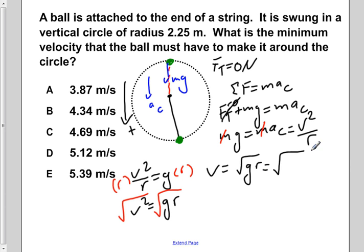Now if we plug in the initial values and our given values, acceleration of gravity is 9.8 meters per second squared, and our radius is 2.25 meters.